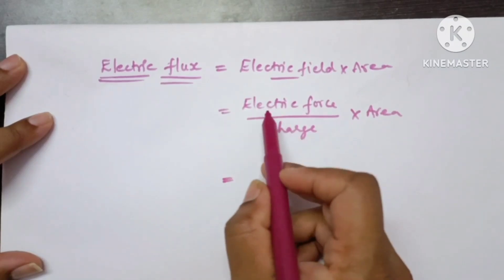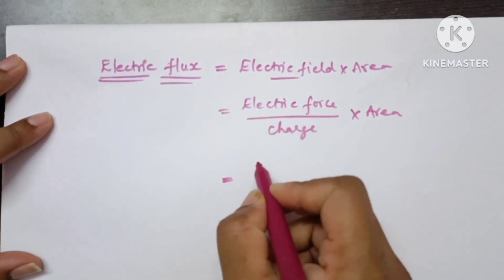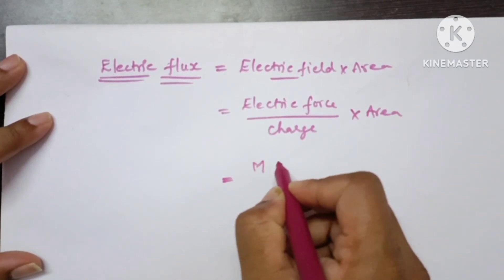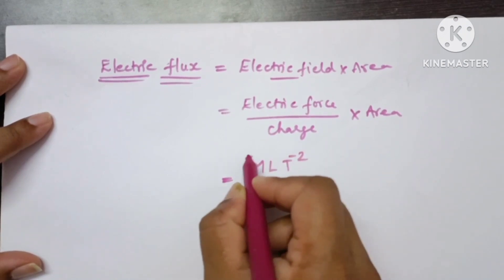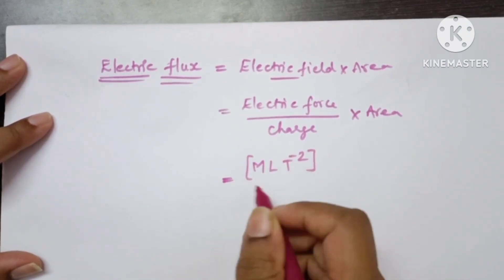Now write the dimensions of electric force, which is nothing but a force. Here directly I am writing the dimensions of force: ML T^-2. If you want, I will give the link in the description box, once check it out.